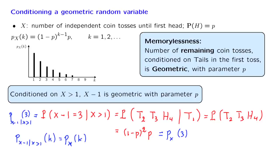Finally, there is nothing special about the value of 1 we used here. We can generalize and argue as follows: suppose that I tell you that X is strictly larger than n — that is, the first n tosses resulted in tails. Once more, these past tosses have no effect on the future, so the conditional PMF of the remaining number of tosses should be the same. Therefore, the geometric PMF will also be the PMF of X minus n, given that X is strictly larger than n, and this will be true no matter what argument we plug into the PMF.